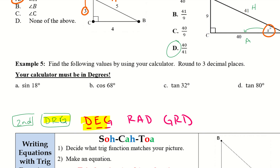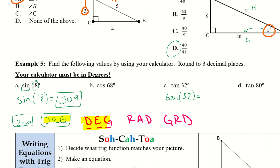Now we'll start plugging values into the calculator. For sine of 18 degrees: press the sine button, it shows sine with a parenthesis, enter 18, close the parenthesis, press equal, and round to 3 decimal places — I get 0.309. Let's do tangent together: press the tan button, plug in 32, close the parenthesis, press equal, and round to 3 decimal places — 0.625.